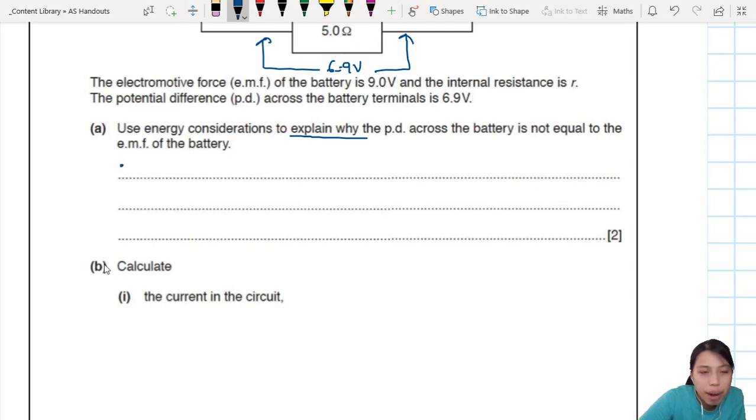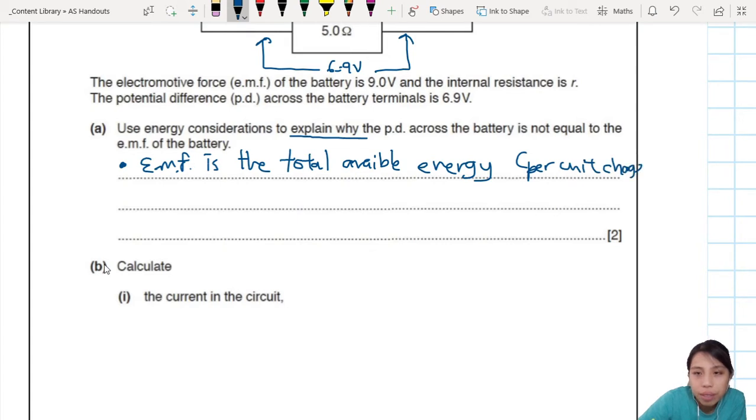The first point is you want to talk about what is EMF? How do you differentiate between EMF and PD? So you need to say EMF is firstly the total energy available. So let me write that out. EMF is the total available energy. That's what it's supplying. But some of it is going to be lost, wasted. Energy per unit charge I should say. Why energy per unit charge? Because you know W equals to QV, so V is energy per unit charge.